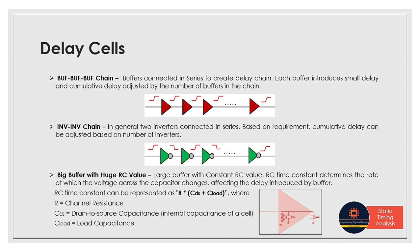Last one is big buffer with huge RC values. So a delay cell could be implemented using a larger buffer with a significant parasitic RC time constant. So RC means resistance capacitance. So the RC time constant determines the rate at which the voltage across the capacitor changes, affecting the delay introduced by the buffer.